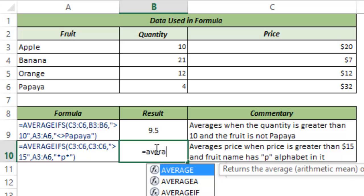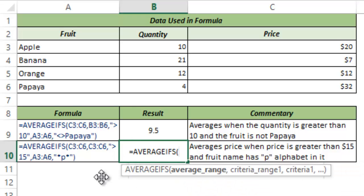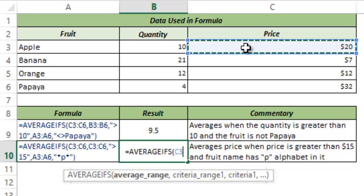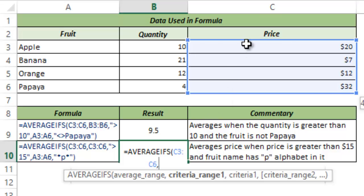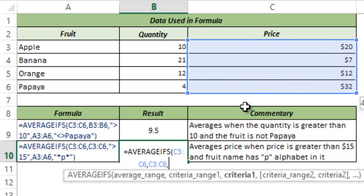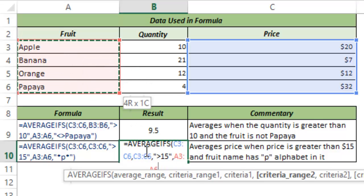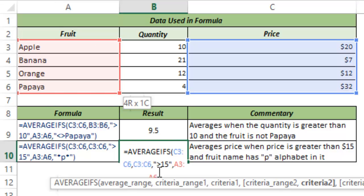I type AVERAGEIFS and hit Tab. Here I want to find the average price when the price is greater than 15 — my first condition — and the second condition is that the fruit name should have the alphabet P in it. I select the average range as the price points. My criteria range1 is also the price points since the condition is price greater than 15, and since I'm using a mathematical operator, greater than 15 goes within double quotes.